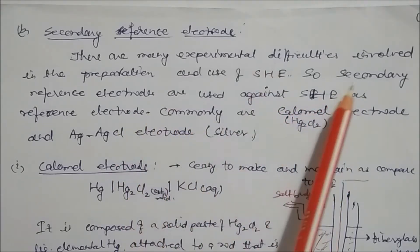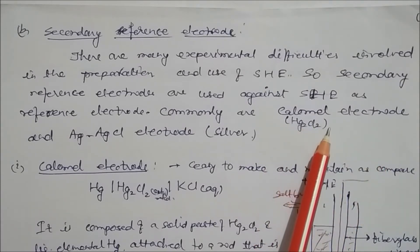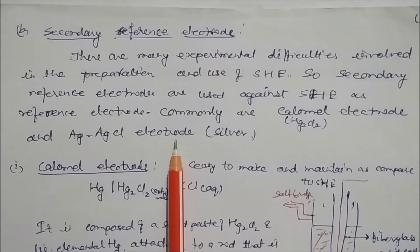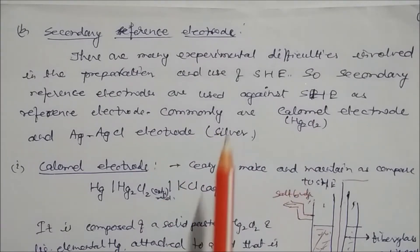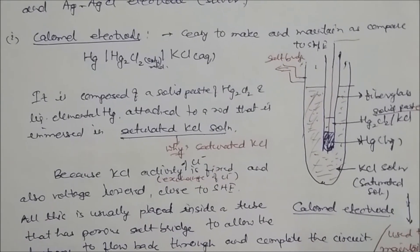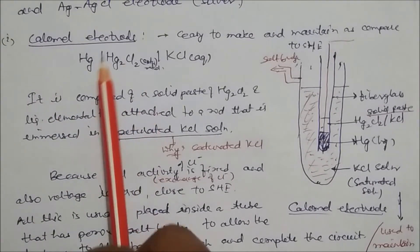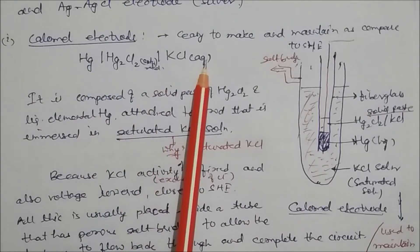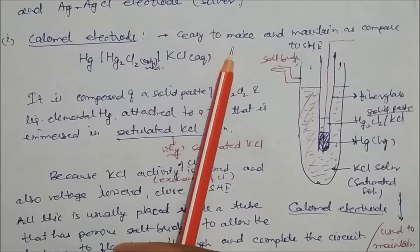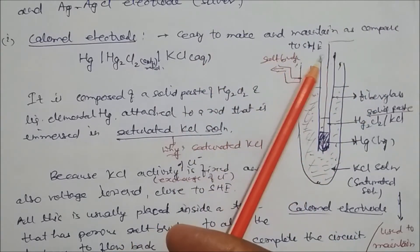Commonly used secondary reference electrodes are: the Calomel electrode (Hg₂Cl₂) and the Silver/Silver Chloride electrode. These are easier to maintain and can be easily prepared as compared to the hydrogen electrode.